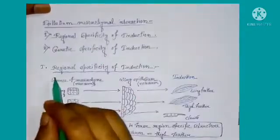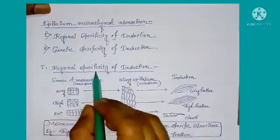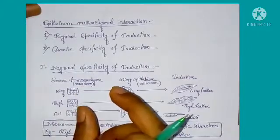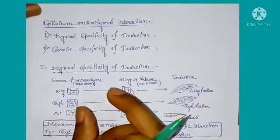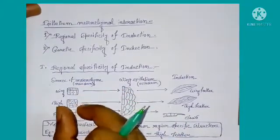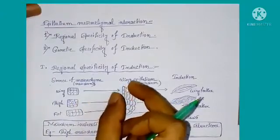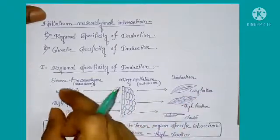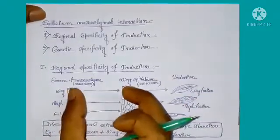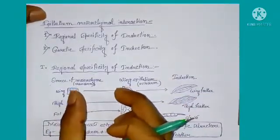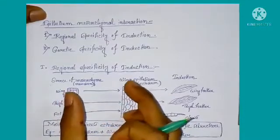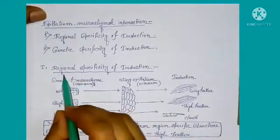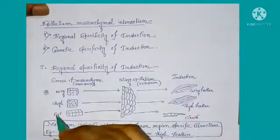Epithelial-mesenchymal interactions are of two types: regional specificity of induction and genetic specificity of induction. Today I discuss about regional specificity of induction. Region means a particular place — the tissue of a particular place induces the tissue of another region and forms a special structure. As the interaction takes place between the cells of two specific regions, this type of interaction is known as regional specificity of induction.